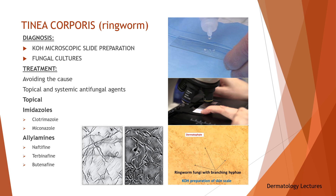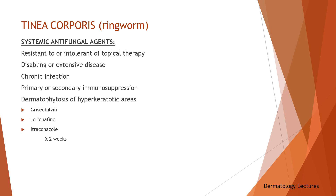The use of systemic antifungal agents may be considered in patients with tinea corporis resistant to topical therapy, chronic infections, primary or secondary immunosuppression, and dermatophytosis of hyperkeratotic areas such as the palms and soles. Among the systemic antifungal agents, griseofulvin, terbinafine, and itraconazole are effective. The usual course of oral therapy for tinea corporis is two weeks.